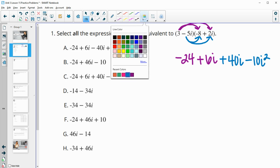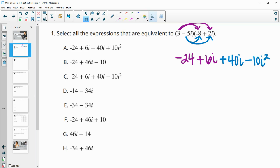Then we know that we can simplify this i squared. So i squared is negative 1. So negative 10 times negative 1 will just make that positive 10.